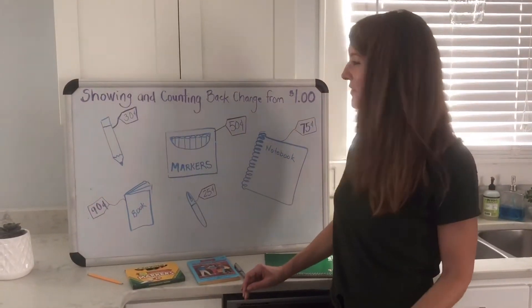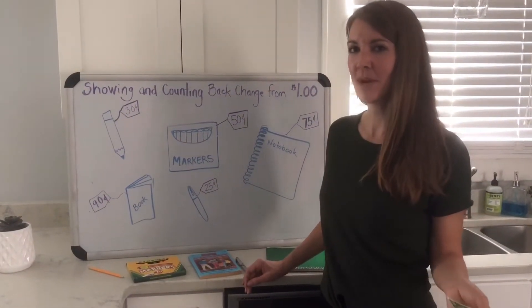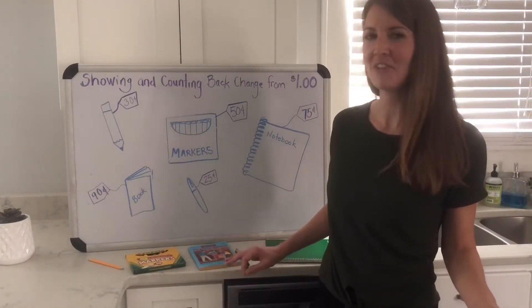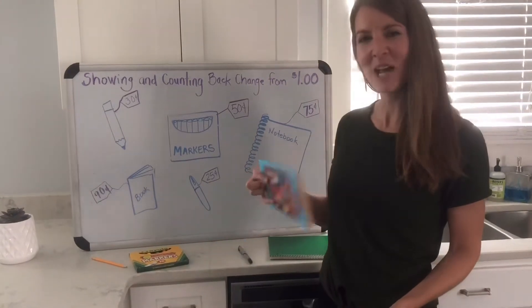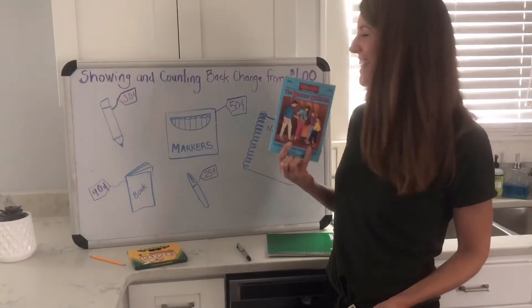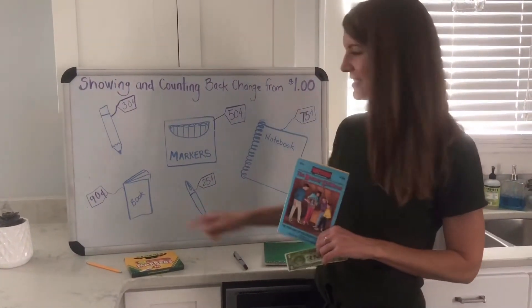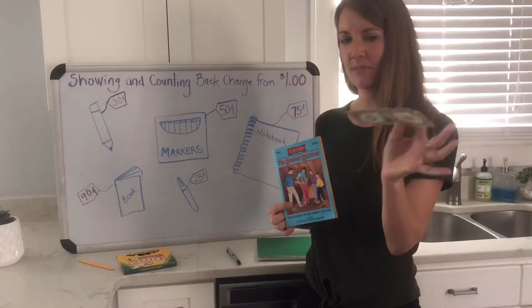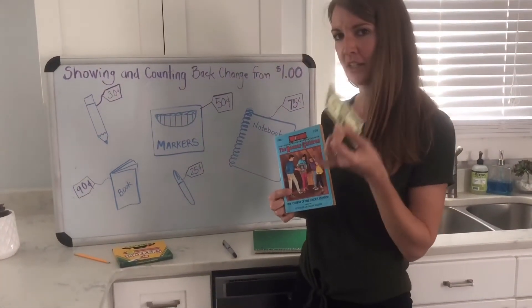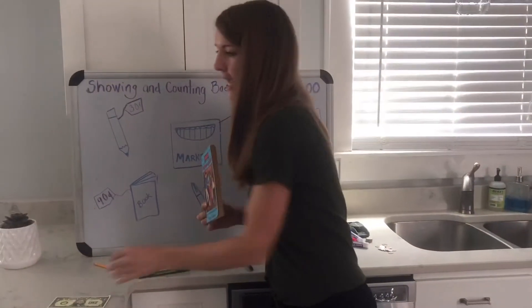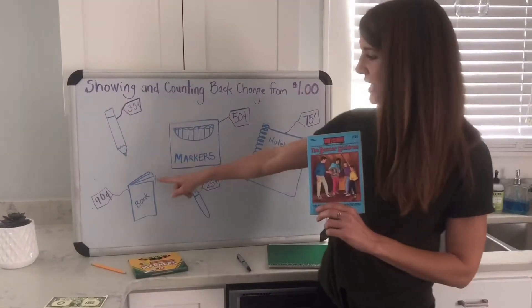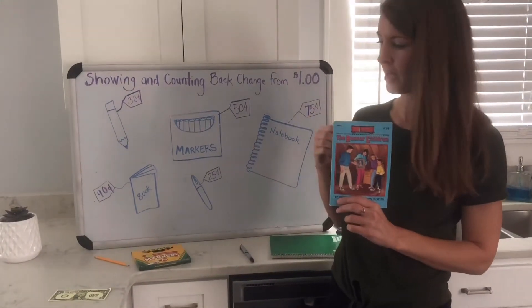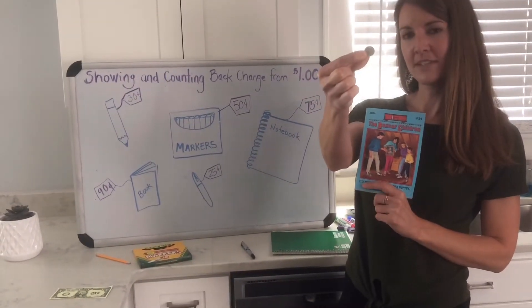A second customer came into the store looking for a good book to read. I have this Boxcar Children book, which costs 90 cents, and they have a dollar to purchase it with. They give me a dollar — 100 cents — and I start at 90 and count up to a dollar using dimes: 90, then 10 more cents is 100. So they get 10 cents back and they keep their book.